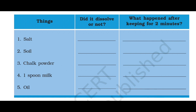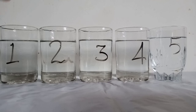The substances which dissolve in water are known as soluble substances. And the substances which do not dissolve in water are known as insoluble substances. Let's find out the soluble and insoluble substances out of them. Take 5 glasses of water and let's start.